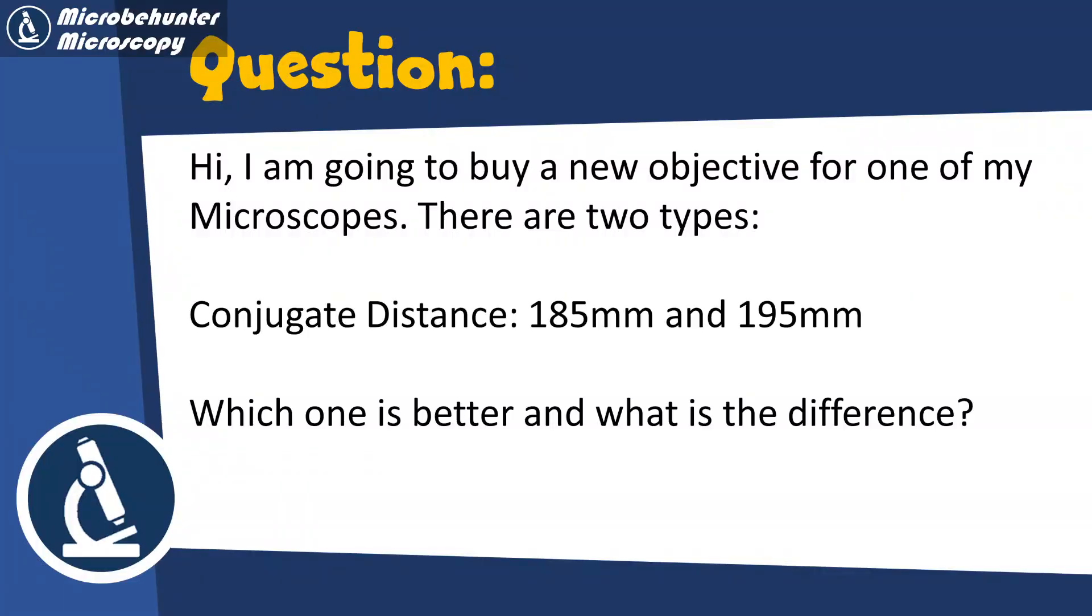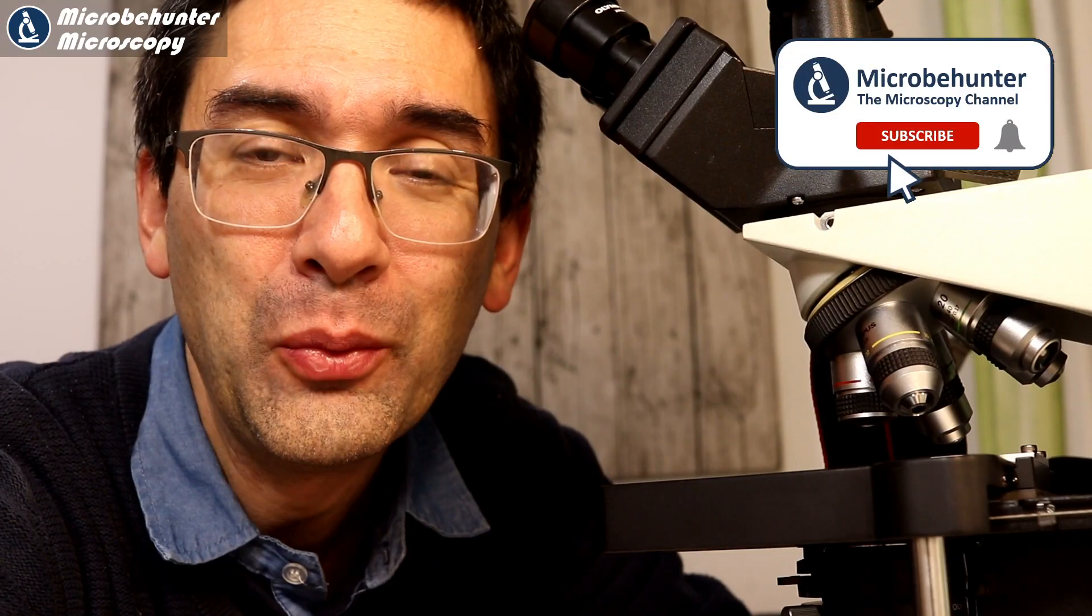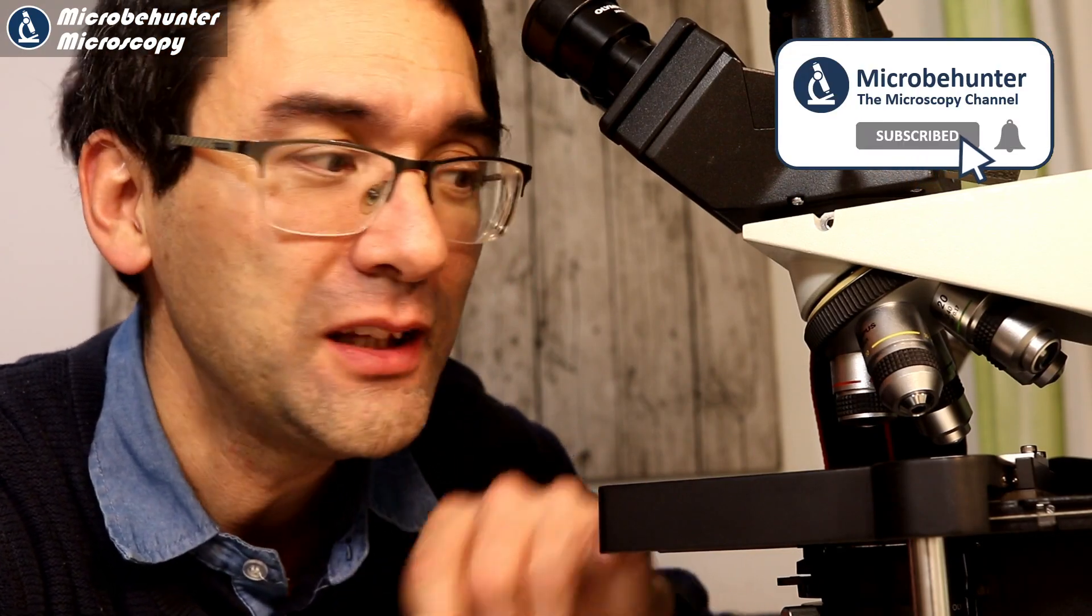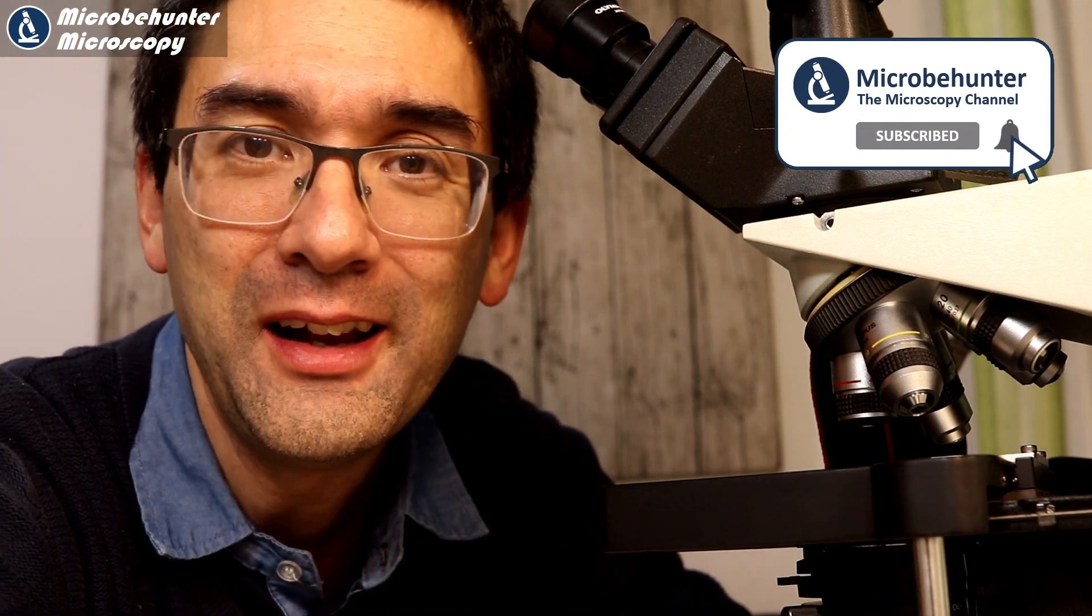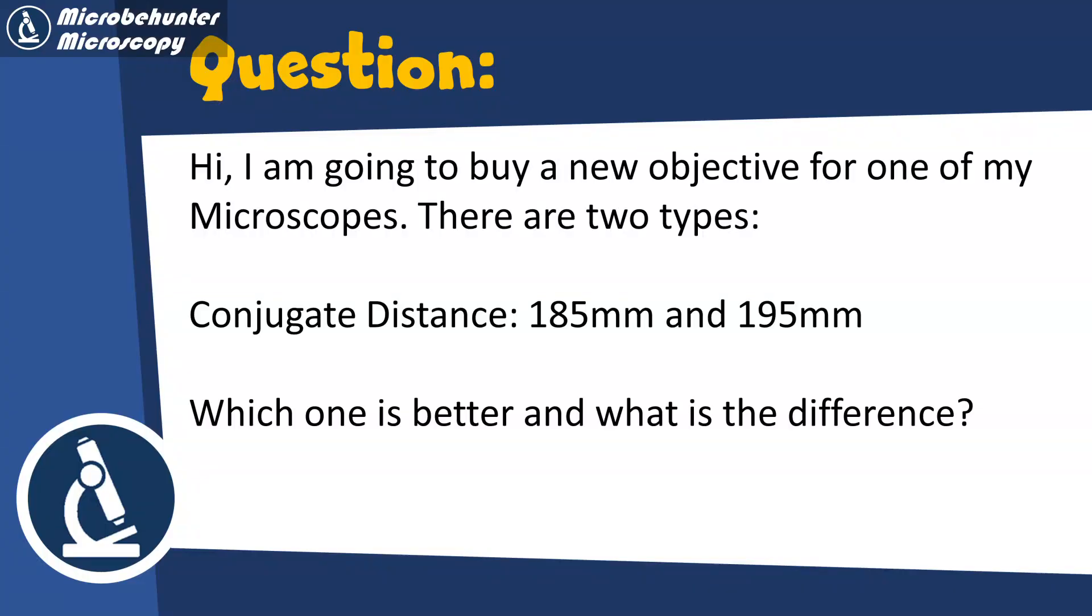Some of my YouTube viewers wanted to know which type of microscope objective to buy, and they found two different versions: those with a conjugate distance of 195 millimeters and those with a conjugate distance of 185 millimeters. I would like to explain what this actually means in this video.